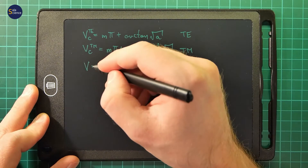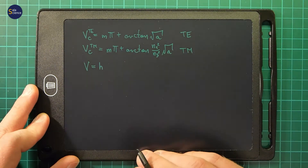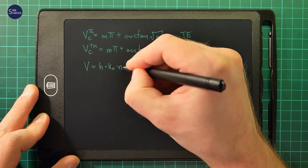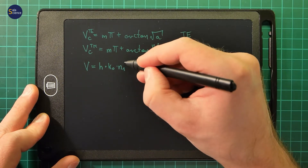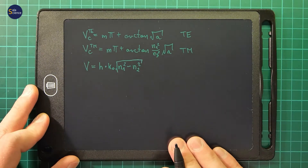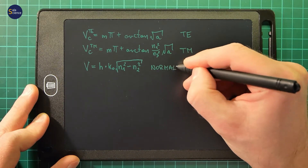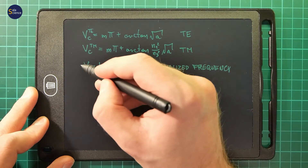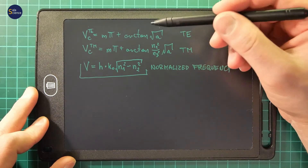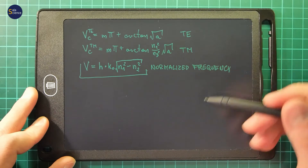The normalized frequency V describes a waveguide. It is the thickness of the core times k0 times the square root of the refractive index of the core squared minus n2 squared. This normalized frequency describes the waveguide structure.